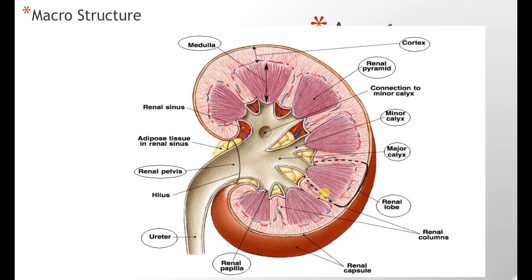Now let's look at some macrostructures. If we cut the kidney in half, this is what the cross-section looks like. The white area is the cortex — this is where the nephrons are located. The pink area is the medulla — this is where the tubular structures are. The medulla forms pyramidal-shaped structures called renal pyramids. The lines running through the cortex down to the medulla are known as the renal columns, or columns of Bertini — these are tubular structures and vessels running down to the medulla. The filtration starts in the cortex and goes down to the medulla.